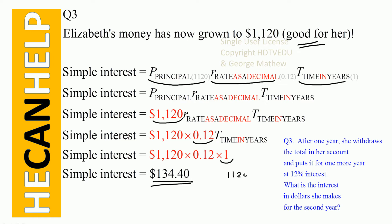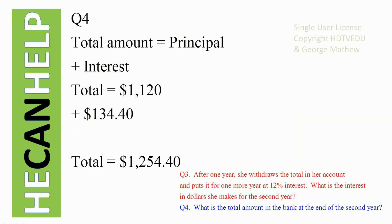She started with $1,120 and now has $134.40 more. So the total amount she has is $1,254.40. Question number four: what is the total amount in the bank at the end of the second year? She started with $1,120, plus the interest she received, giving a total of $1,254.40.